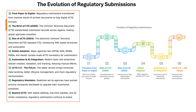Imagine a time when regulatory submission meant shipping truckloads of paper to health authorities. The pharmaceutical industry has come a long way from paper-based applications to fully digital automated ECTD submissions. In 2000, the common technical document CTD revolutionized global submissions, creating a standardized format across major markets. By 2003, the ECTD was born — an electronic structured version of the CTD, using XML to manage submissions efficiently.